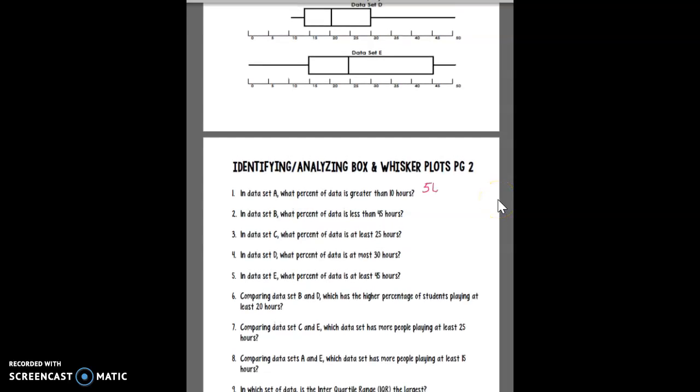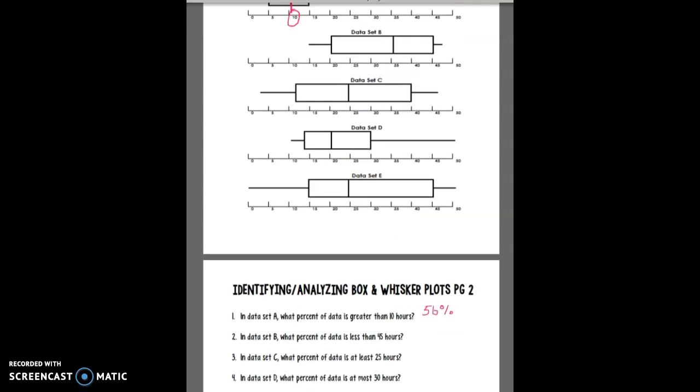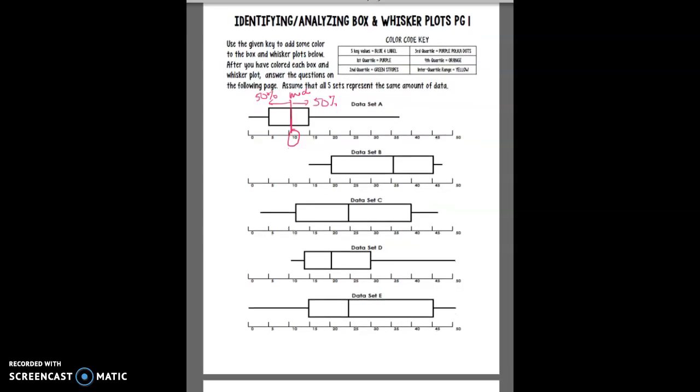And then it says in set B what percent of the data is less than 45 hours. So let's see where's 45? 45 is here, right? So each one of these markings, this is 25%, this is 25%, this is 25%, and this is 25%. So this is kind of here. So I know that 75% of the data is less than 45 hours.